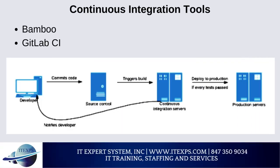Bamboo is an automation server for continuous integration that can automatically build, test, integrate, and document source code to prepare apps for deployment. It offers a simple user interface for CI/CD and various features, including automated merging and built-in deployment support.